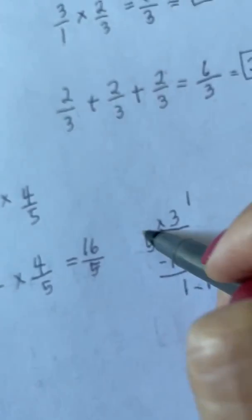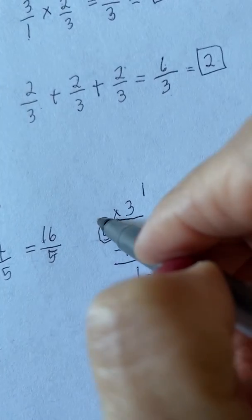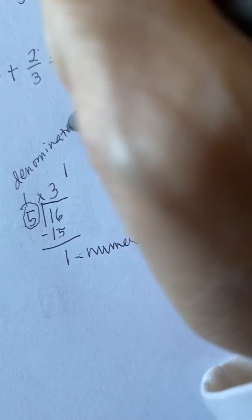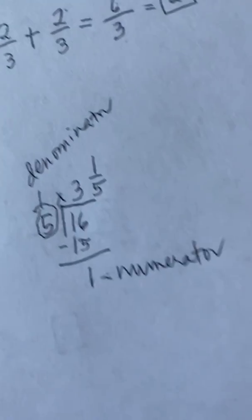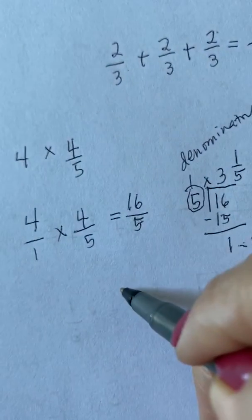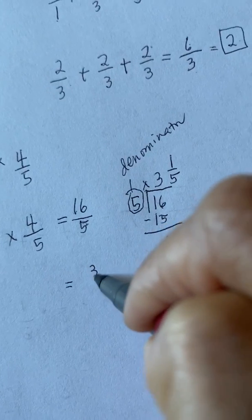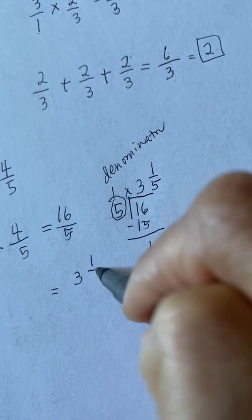We put it here. And the 5, which is your divisor, will become your denominator. Let me write it down. So it will be 5. There you go. So 16 divided by 5 is equal to 3 and 1 fifth.